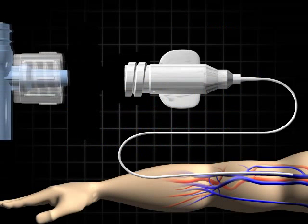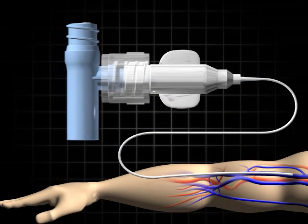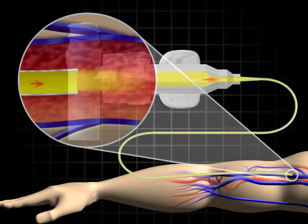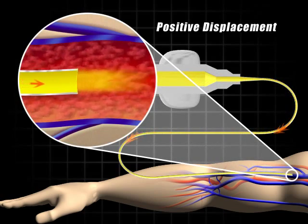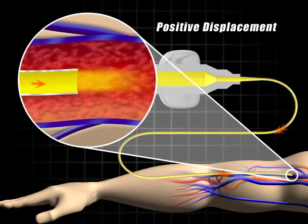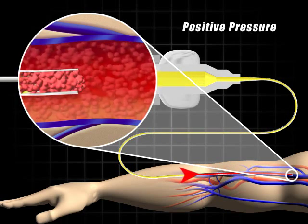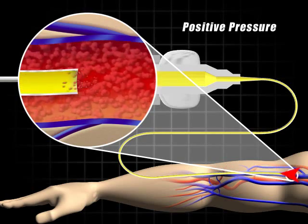The CLC2000 is the only device which guarantees positive displacement to eliminate any reflux of blood into the catheter lumen upon disconnection. Positive displacement is the complete displacement of potential blood reflux, where the end result is different from positive pressure, which may not completely displace the blood reflux.